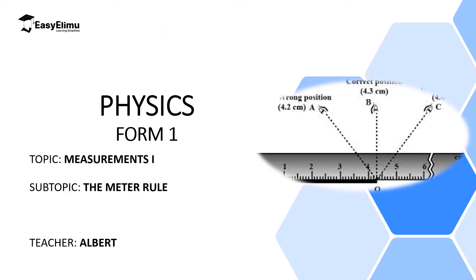Hello students, welcome to Eclimu Learning Simplified. Welcome to this lesson. In the previous lesson we discussed length — length is the distance between two points. We also discussed different instruments used to measure length, including a meter rule, tape measures, vernier calipers, and micrometer screw gauge. In this lesson we are going to discuss the meter rule. My name is Albert; I hope you are enjoying the lesson.